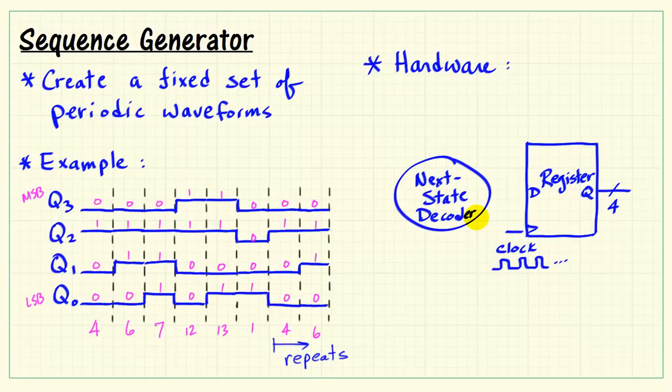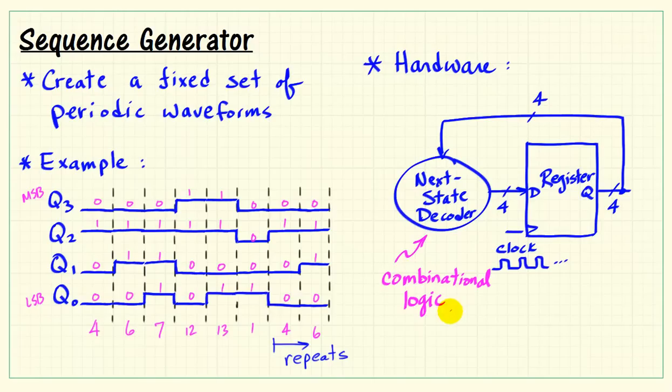We'll need some combinational logic called the next state decoder that translates the present value in the register to the next value to drop into the register on the subsequent clock cycle. Purely combinational logic right there.